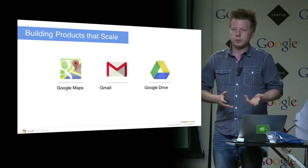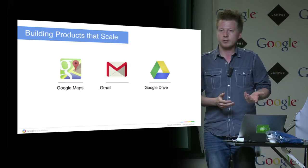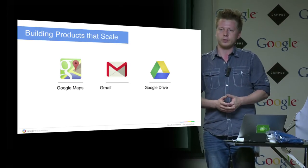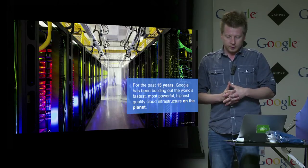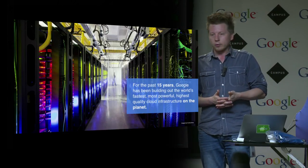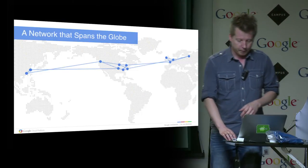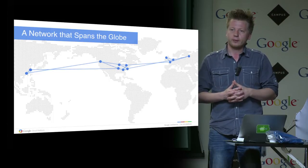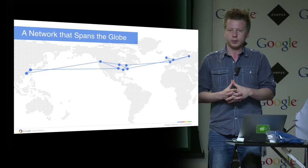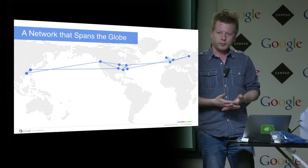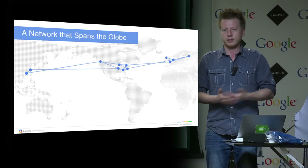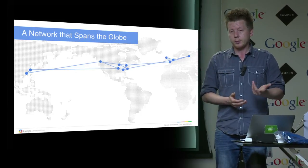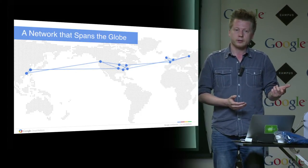We've always been building apps and services to scale for a huge number of users — think about Gmail, Google Drive, or Maps. For the past 15 years, we've been building the world's largest and most powerful infrastructure on the planet. We've led a consortium of companies to build a unity cable on the floor of the Pacific Ocean, so we peer with virtually all ISPs worldwide. This cable gives us a few terabytes of bandwidth between continents for us and our partners.